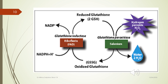Reduced glutathione reacts with hydrogen peroxide (a free radical) in the presence of the selenium-dependent enzyme glutathione peroxidase, converting hydrogen peroxide into water; reduced glutathione is converted into oxidized glutathione. This oxidized glutathione is then reduced by glutathione reductase in the presence of NADPH, which is generated by glucose-6-phosphate dehydrogenase in the HMP shunt pathway. Therefore, in glucose-6-phosphate dehydrogenase deficiency, RBCs are liable to lysis, especially when oxidizing agents are administered, as in drug-induced hemolytic anemia.